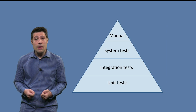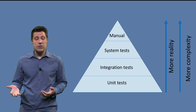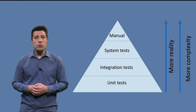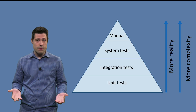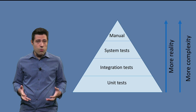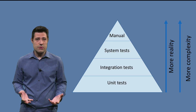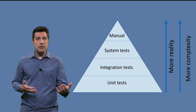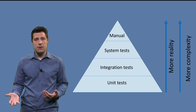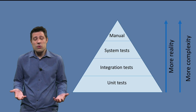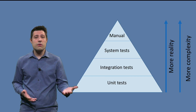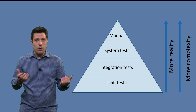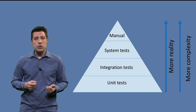If you think about the advantages and the disadvantages, you can see that the more you go to the top of the pyramid, the more real the test is. After all, a system test is more real than a unit test. But it's also more complex to automate, and that is why we try to balance between both.